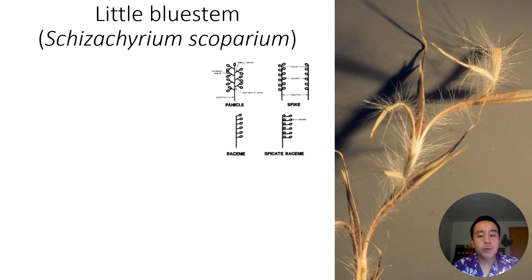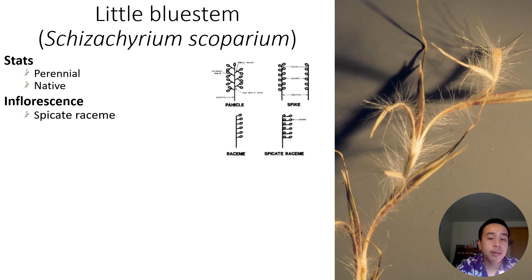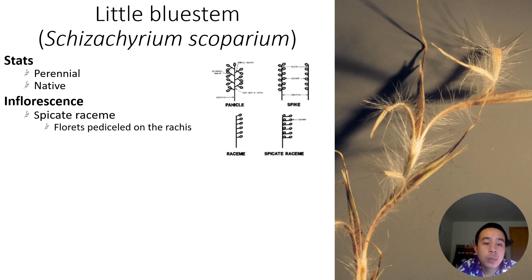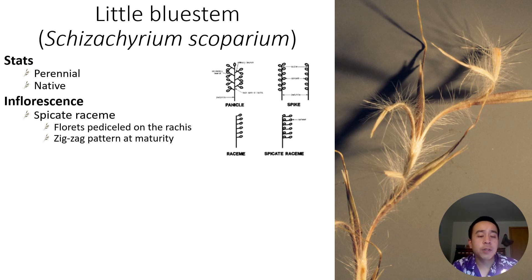Next we're moving on to little bluestem, Schizachyrium scoparium. It's also a perennial native species, and its inflorescence type is what we would call a spicate raceme. Previously we talked about spikes with sessile spikelets, and panicles with branched pedicels. Racemes are also pedicillate but not necessarily branched. A spicate raceme means the florets are pedicillate and on one side of the rachilla or rachis. At maturity this often causes the inflorescence to have a zigzag pattern.